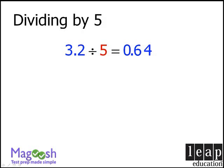Let's try another example. To perform this division, we'll take our dividend of 435 and double it to get 870. And now we'll take our decimal point, which we know is here, and we'll move it one space to the left to get 87.